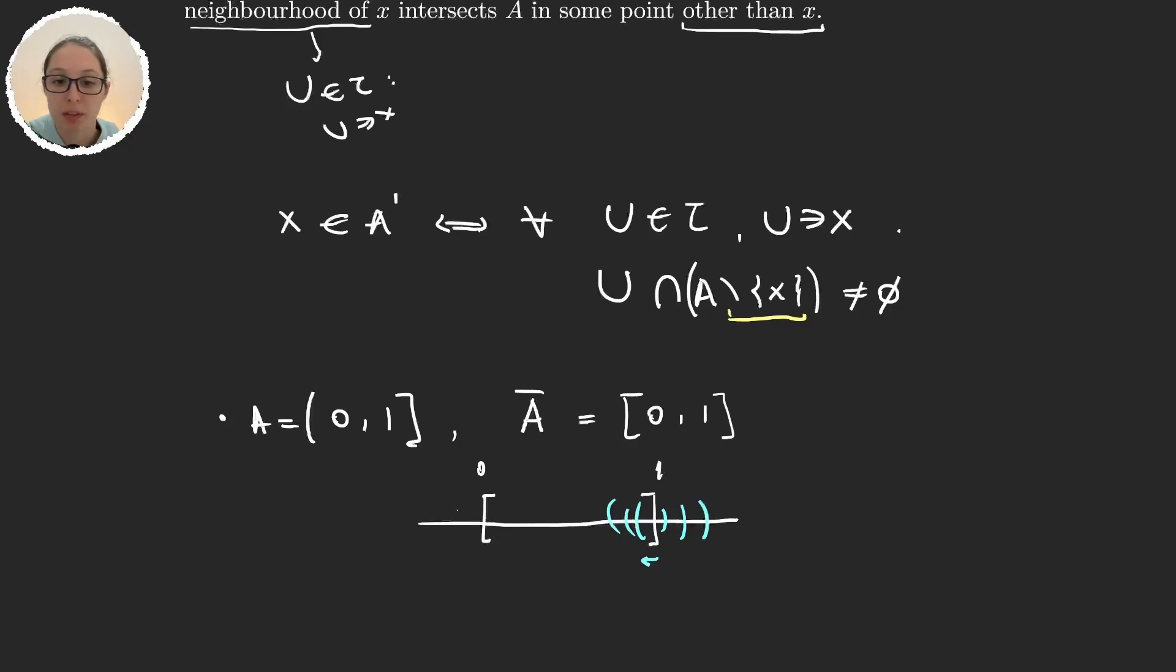And the same happens for example with 0. Every time I move a bit to the right of 0, I'm immediately adding infinite elements in this interval. But also every element inside of A because of the same reason.